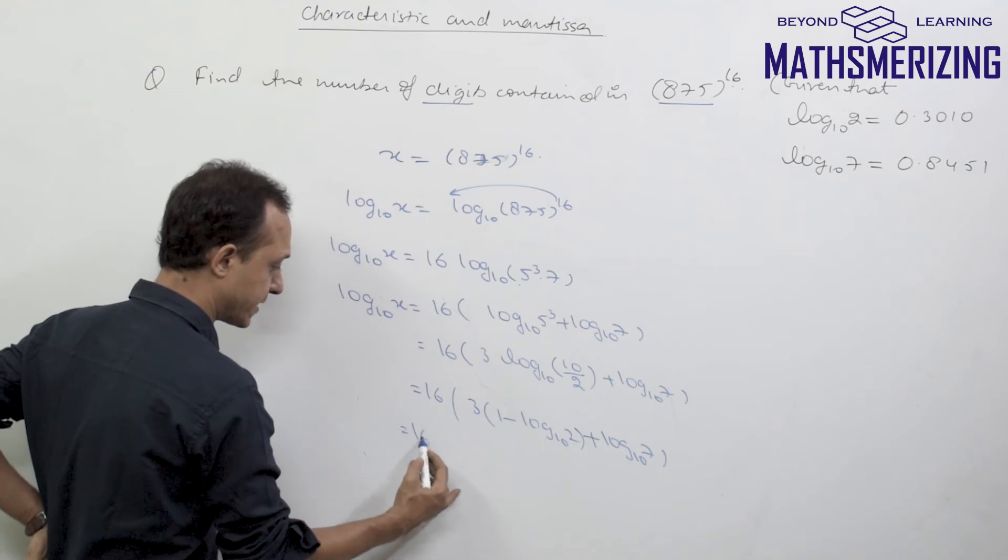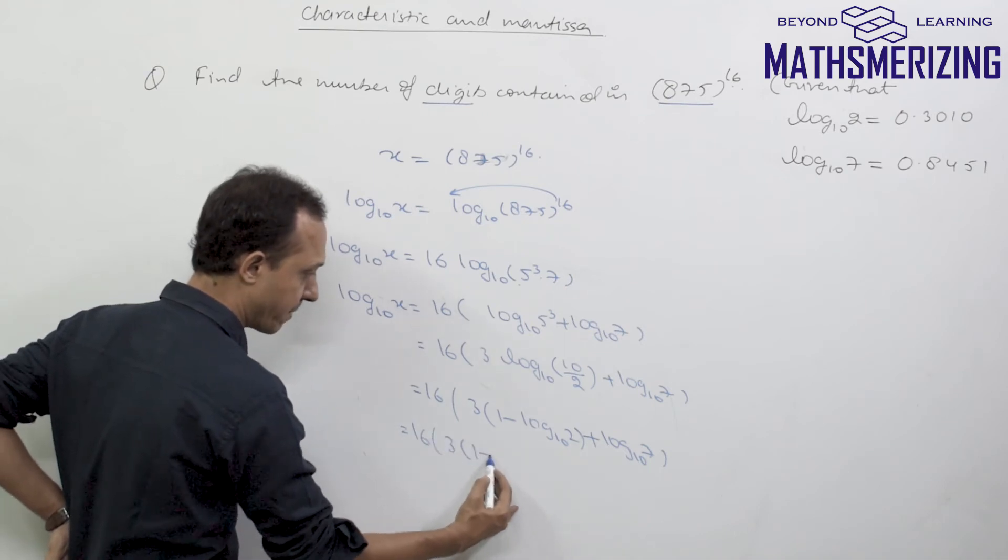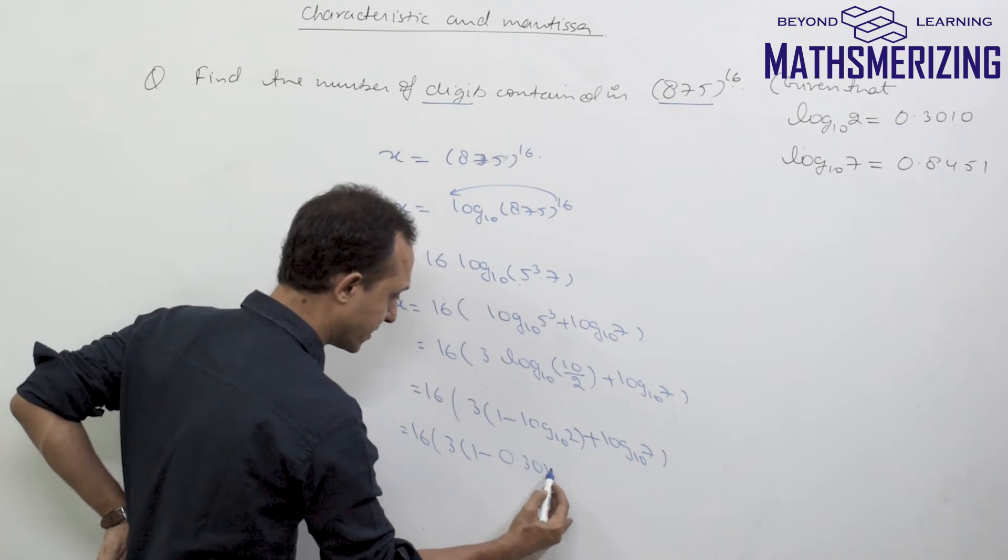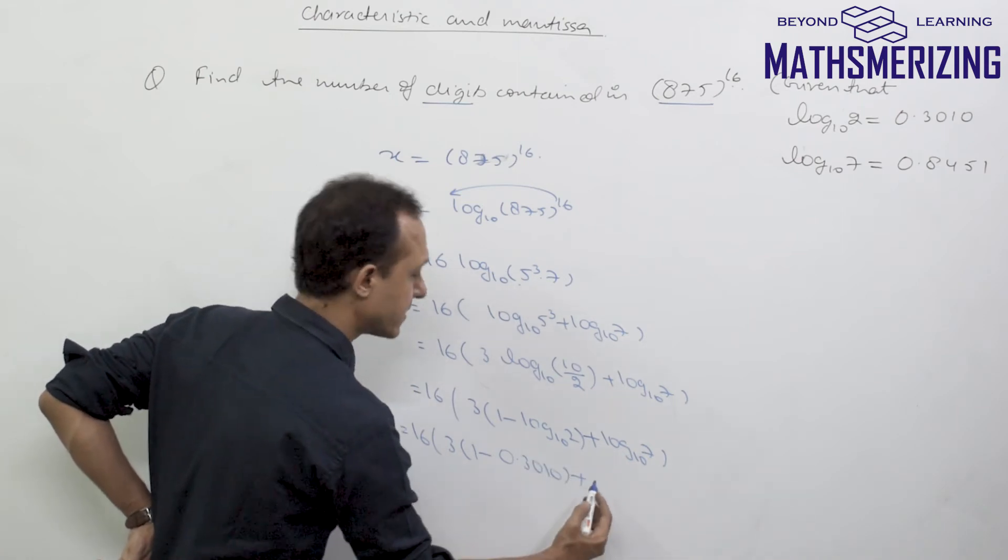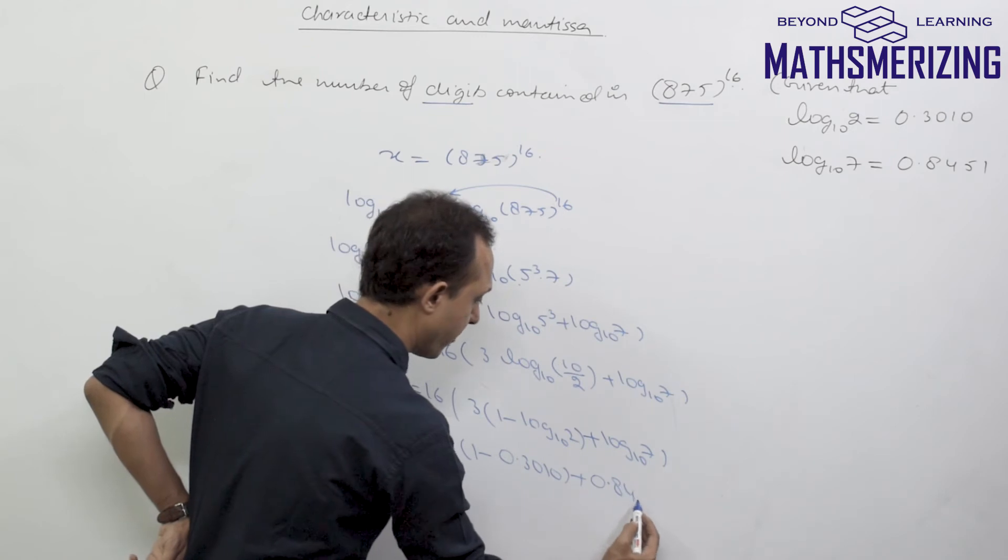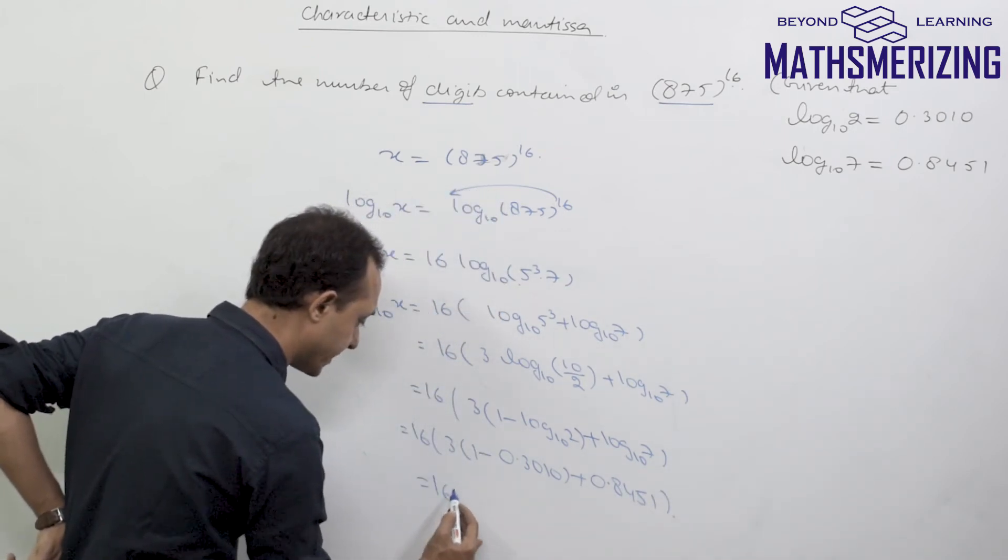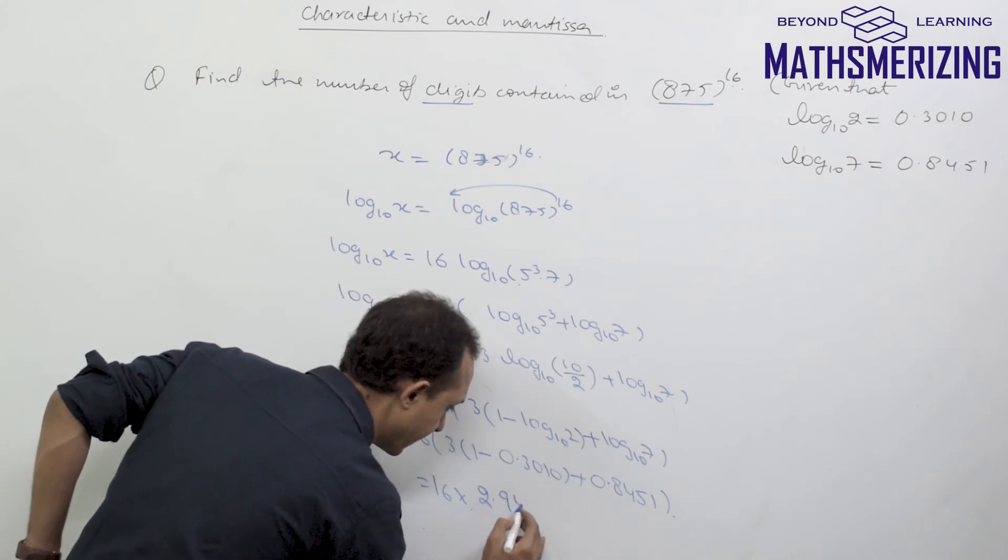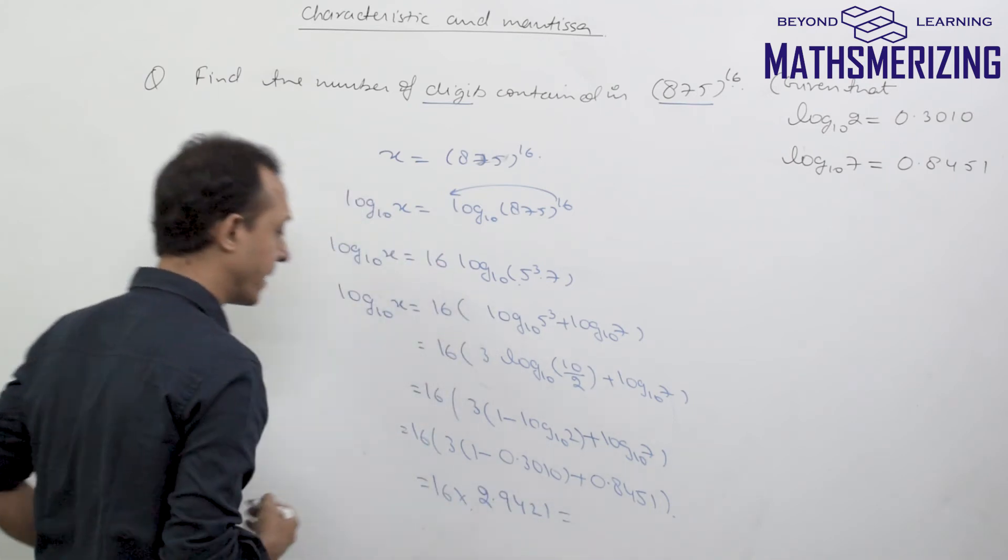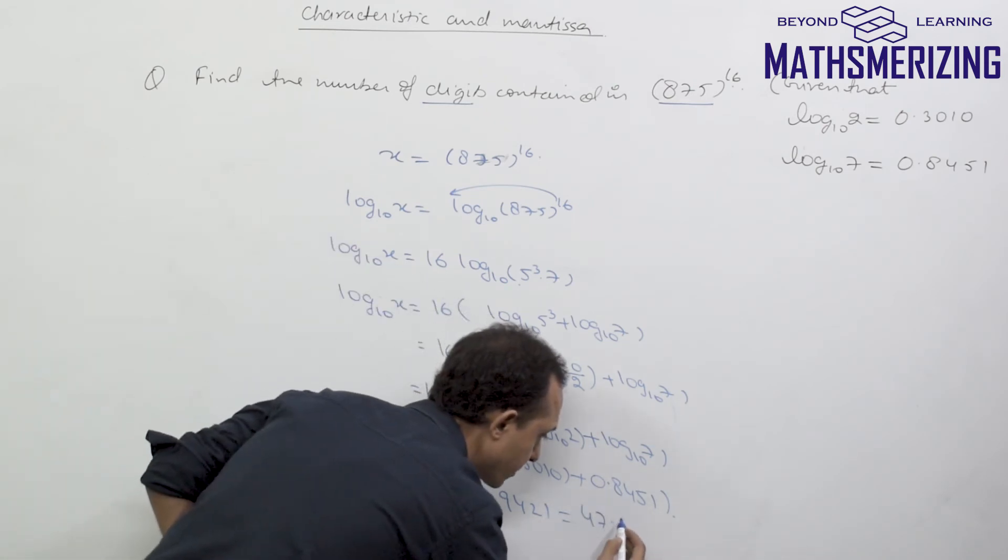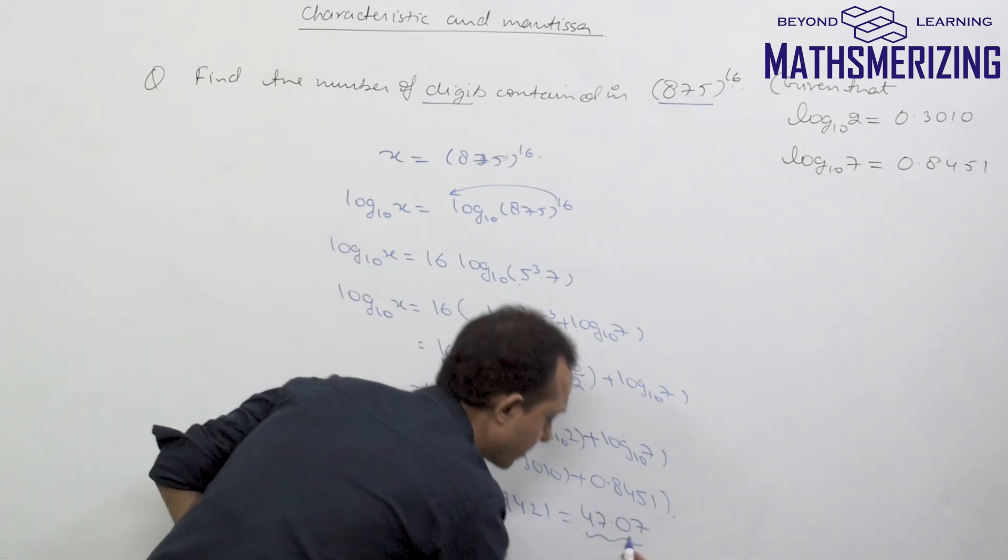This is 16 times 3 times log 5 plus log 7 base 10. So this is 16 times 3 times (1 minus log 2), which is 0.3010, plus 0.8451. This value is 16 into 2.9421, and if I multiply it with 16, I'll get 47.07 something.